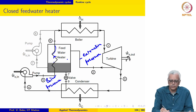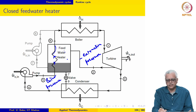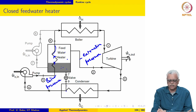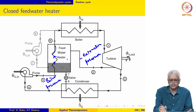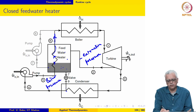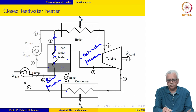The feed water, as it moves through the heater, is heated by the steam that enters. As the steam transfers its enthalpy to the feed water, it condenses and there is a condensate or saturated liquid at the bottom of the feed water heater. There are two strategies for handling this saturated liquid condensate: one is to throttle it to the condenser pressure and send it to the condenser, or pump the condensate using a pump to the boiler pressure and send it to the boiler along with the feed water exiting the heater.